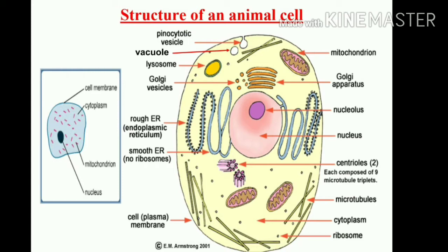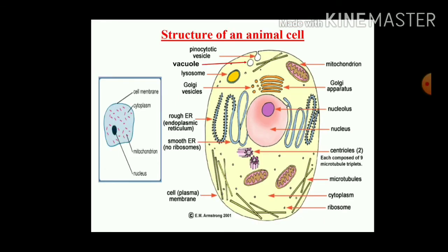These nodes are nothing but the ribosomes. These ribosomes are present over the reticulum, so it is called rough because it is not smooth. The rough endoplasmic reticulum has ribosomes on it, while smooth endoplasmic reticulum has no ribosomes. Mitochondria is also known as the energy house — whatever energy is required, it is created by the mitochondria. The ribosomes are also present in the cytoplasm.